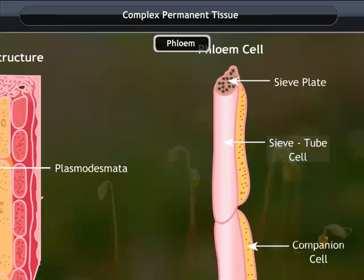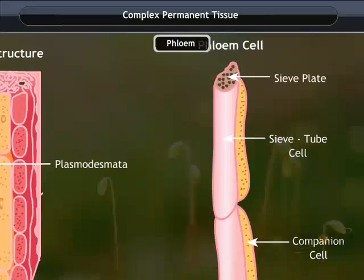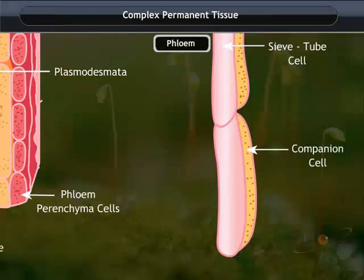Sieve tubes are elongated tubular cells with pores at each end in the cross wall, which permit longitudinal flow of materials through them. Companion cells are found next to the sieve tube cells and help in the delivery of substances to them.